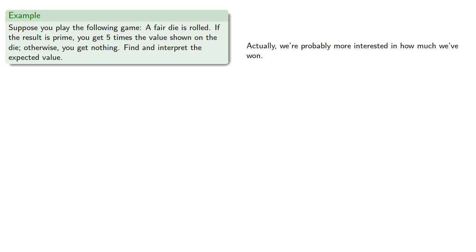And in that case, our outcomes are different. We want our outcomes to be the amount that we win. So if the result is prime, we get five times the value shown on the die. Otherwise, we get nothing. So we get zero if we roll a one, four, or six. And the probability that occurs is three sixths.